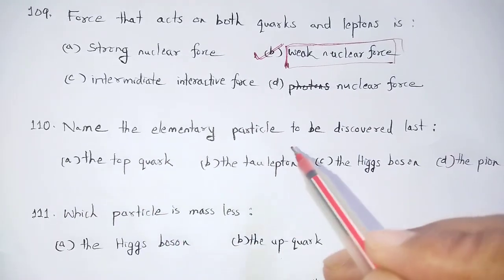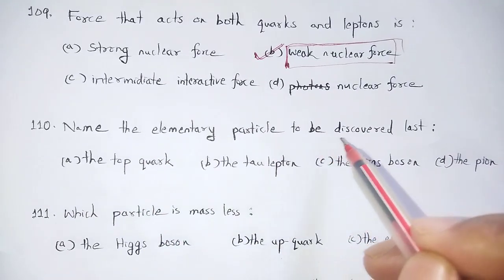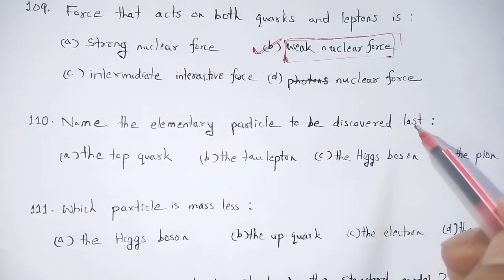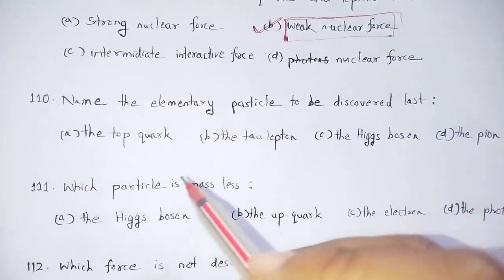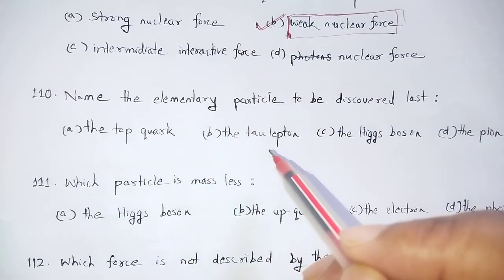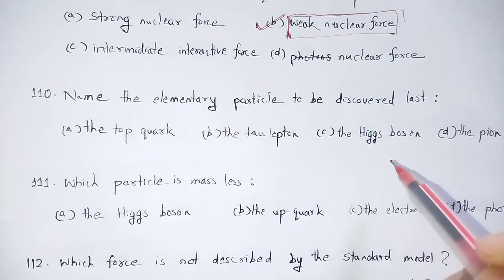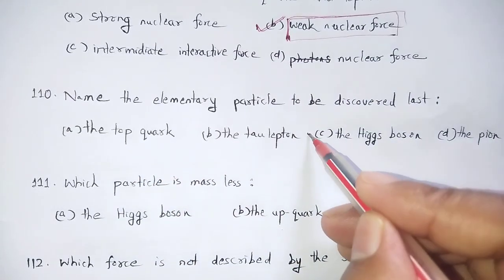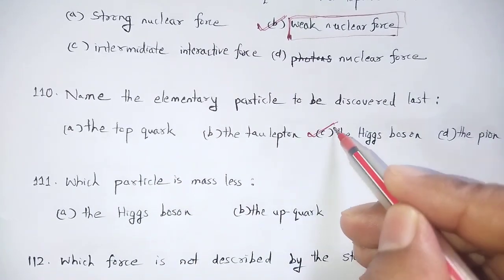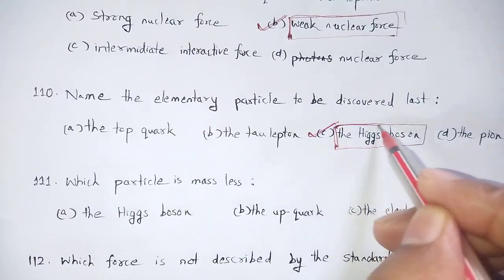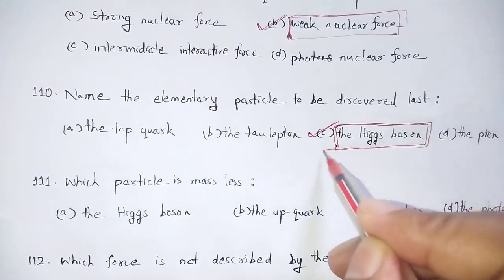Name the elementary particle to be discovered last. Options: the top quark, the tau-lepton, the Higgs boson, the pion. The Higgs boson was the last discovery — the Higgs boson is the correct answer.